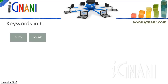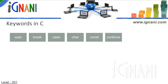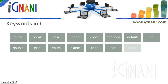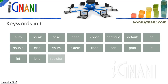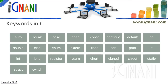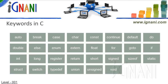The 32 C keywords are: auto, break, case, char, const, continue, default, do, double, else, enum, extern, float, for, goto, if, int, long, register, return, short, signed, sizeof, static, struct, switch, typedef, union, unsigned, void, volatile, and while.